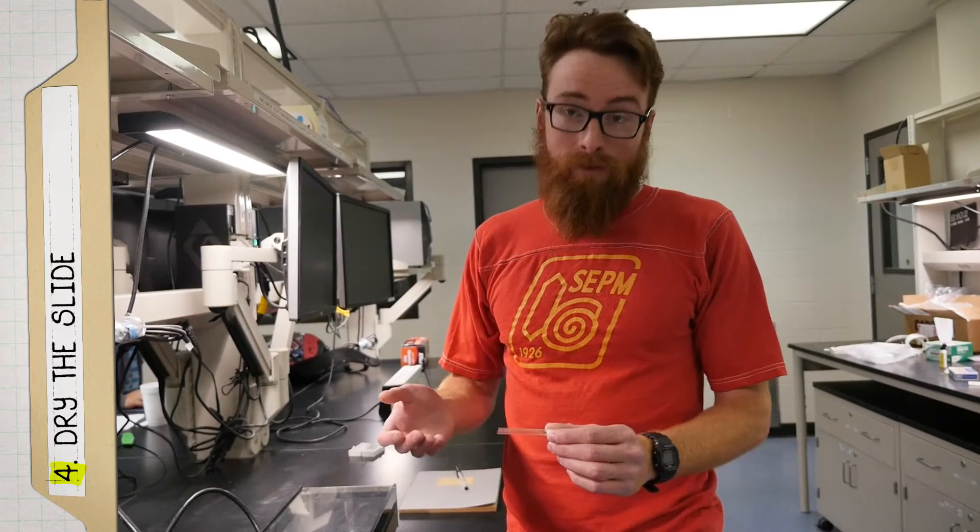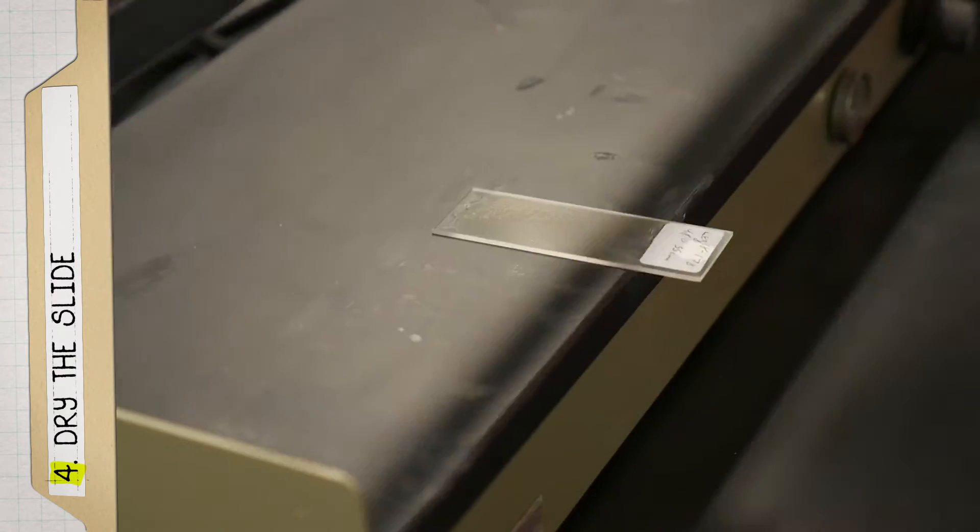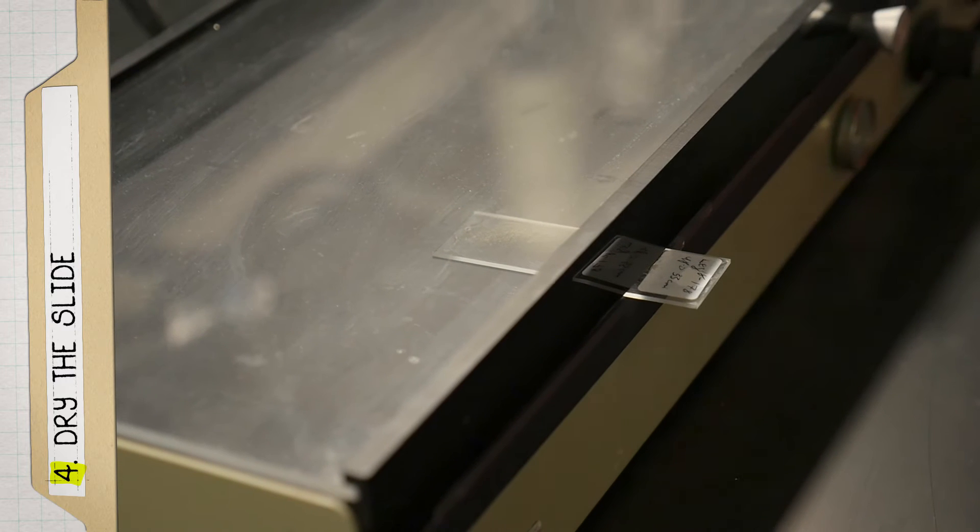After we've dispersed the sample on the slide, we have to dry off the water. So we use a hot plate, place the slide on the hot plate, close it, and come back when it's dry.